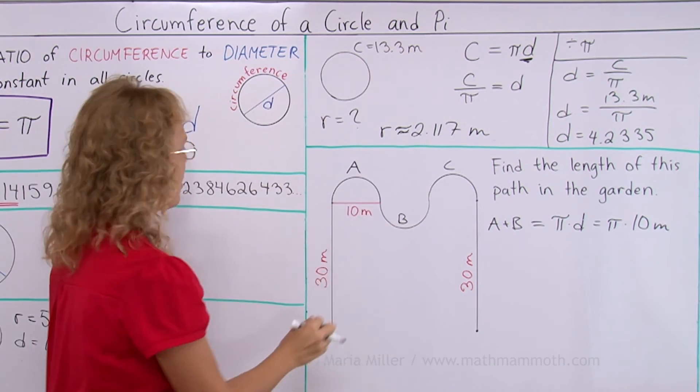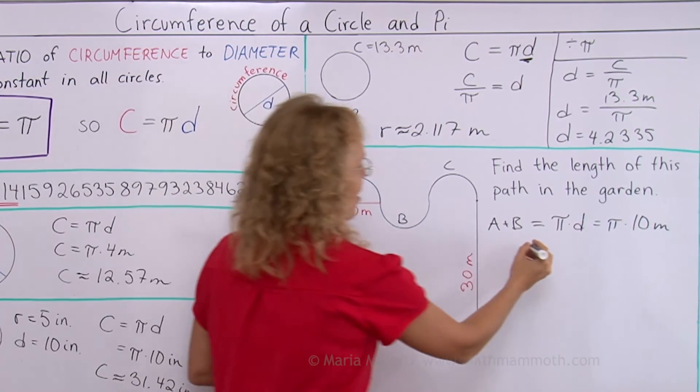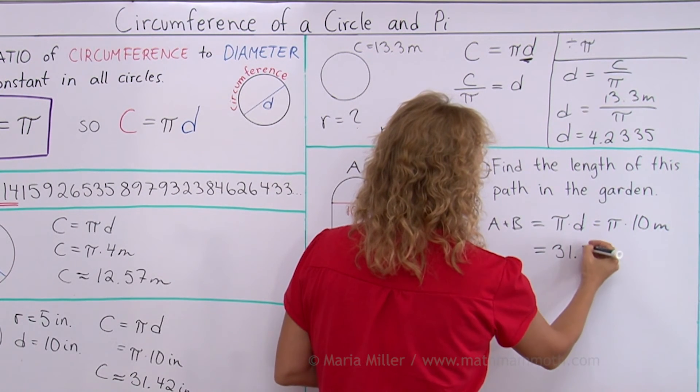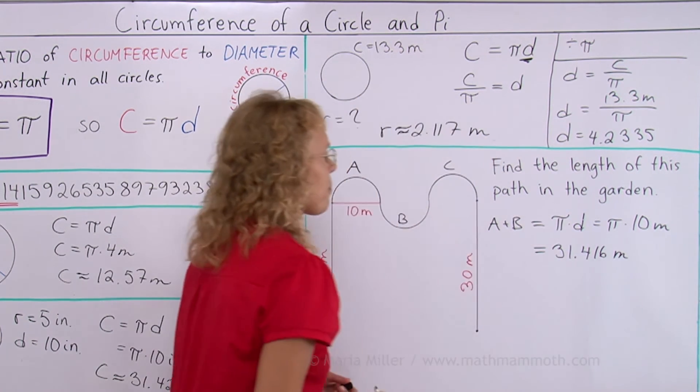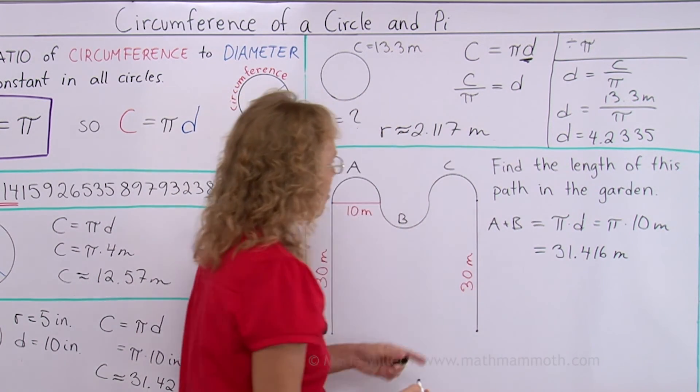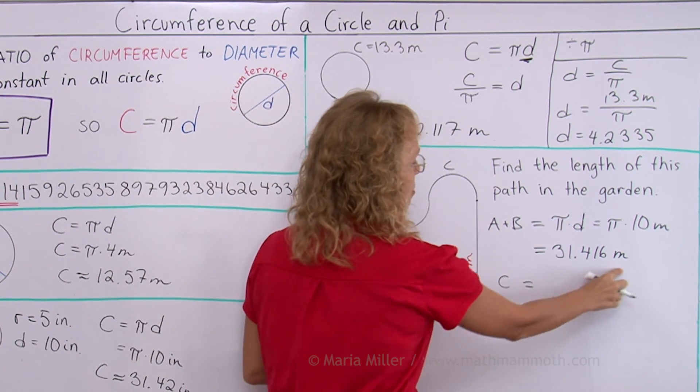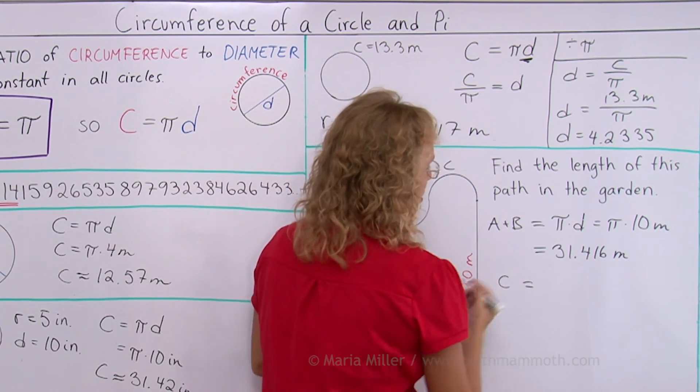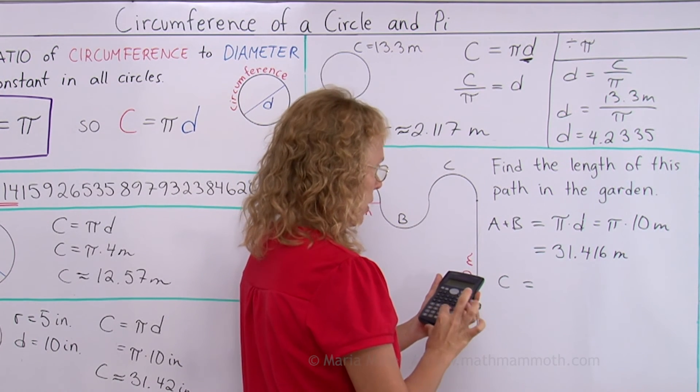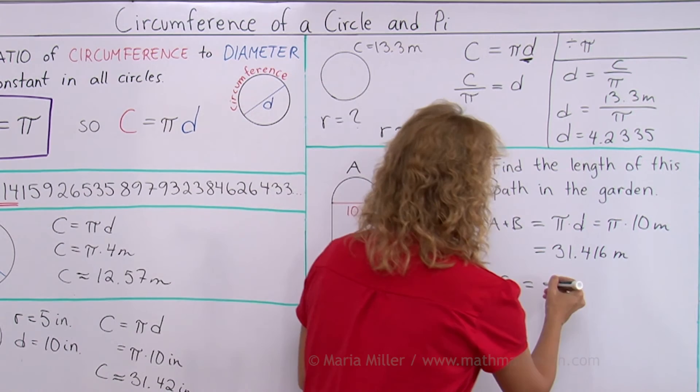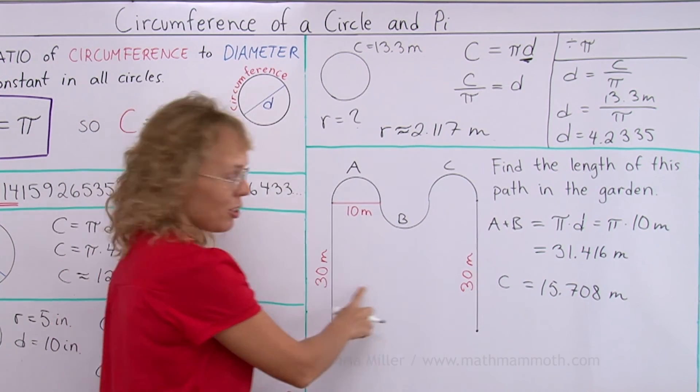10 meters being the diameter. So multiply this number by 10, which is easy. You move the decimal point. So we get 31.416 meters. And now we take the path C, which is half a circle. C would be half of this number, right? So we will get, let me use my calculator for that, we'll get 15.708 meters. And then we have 30 meters and 30 meters.